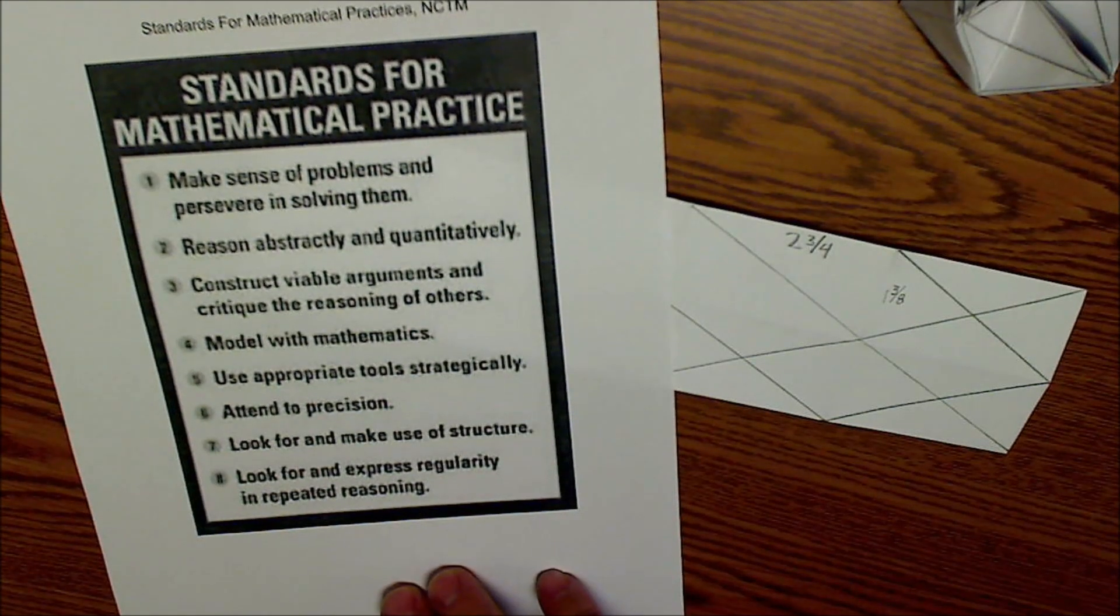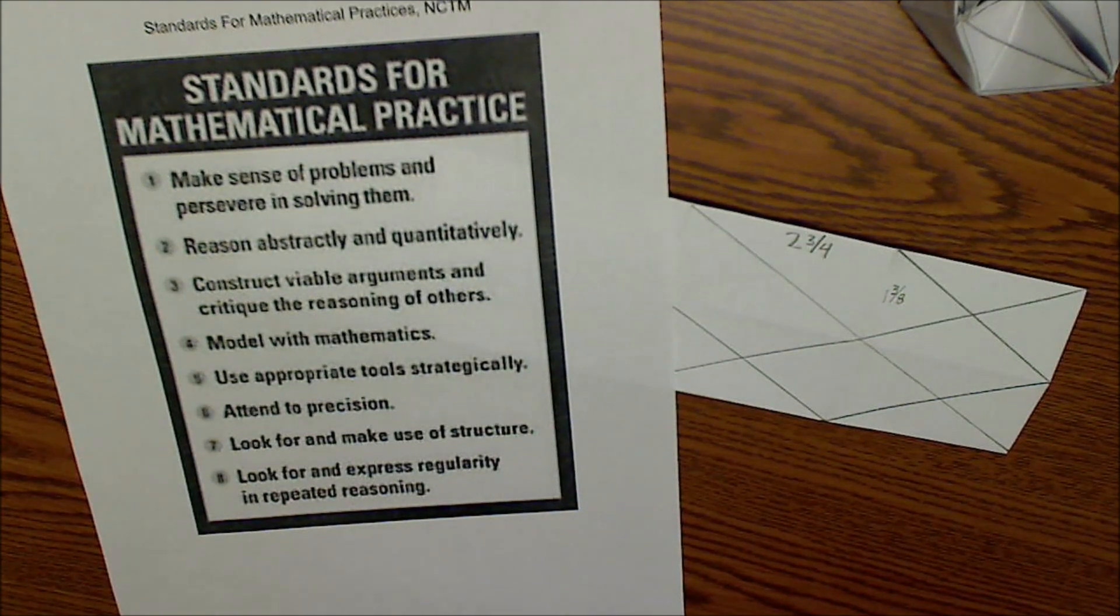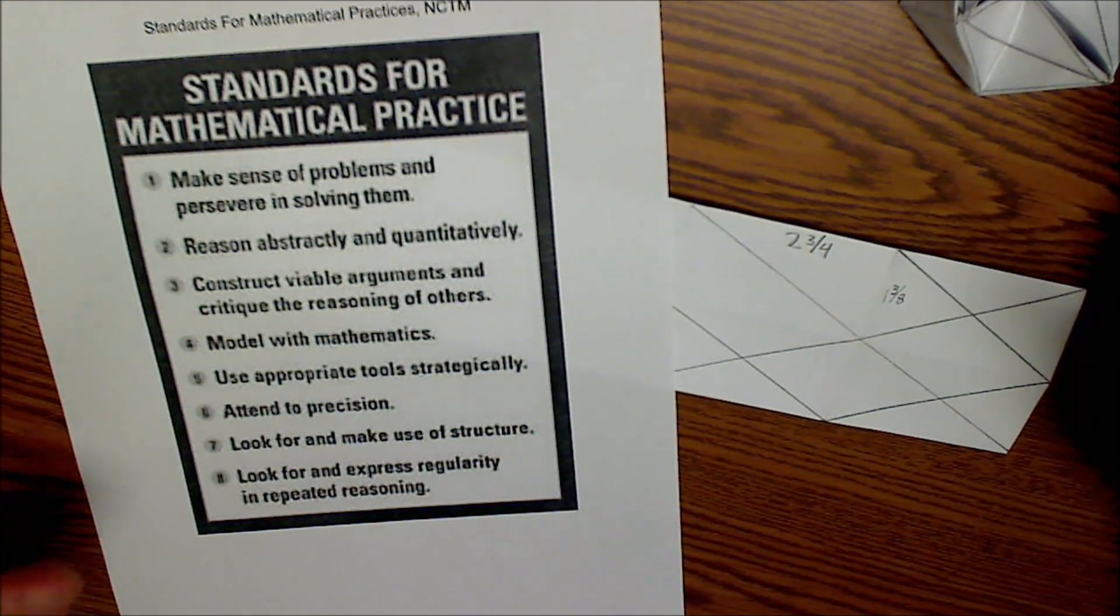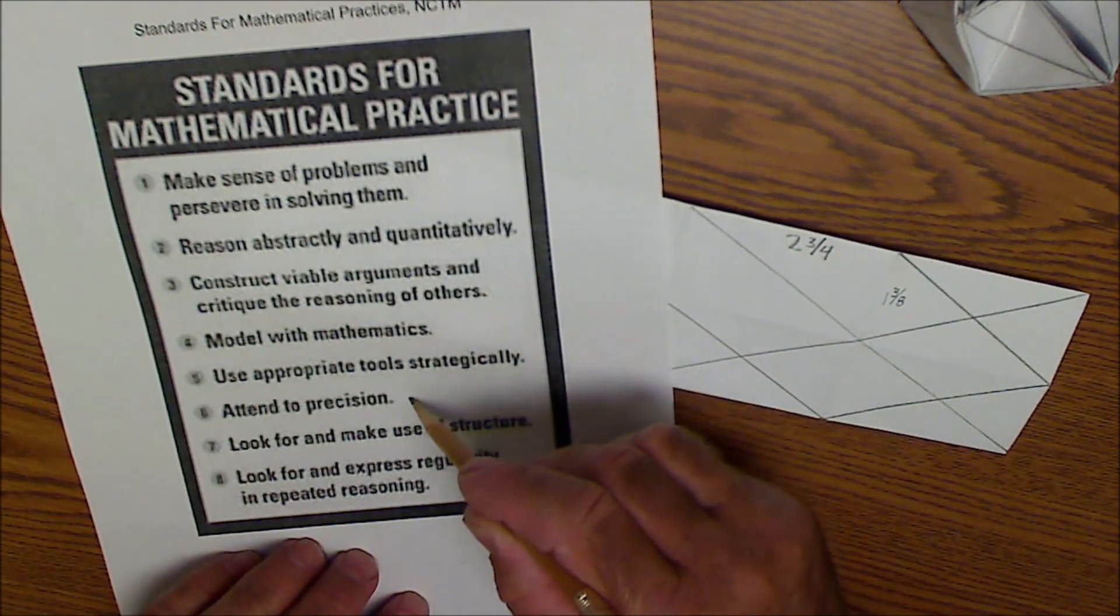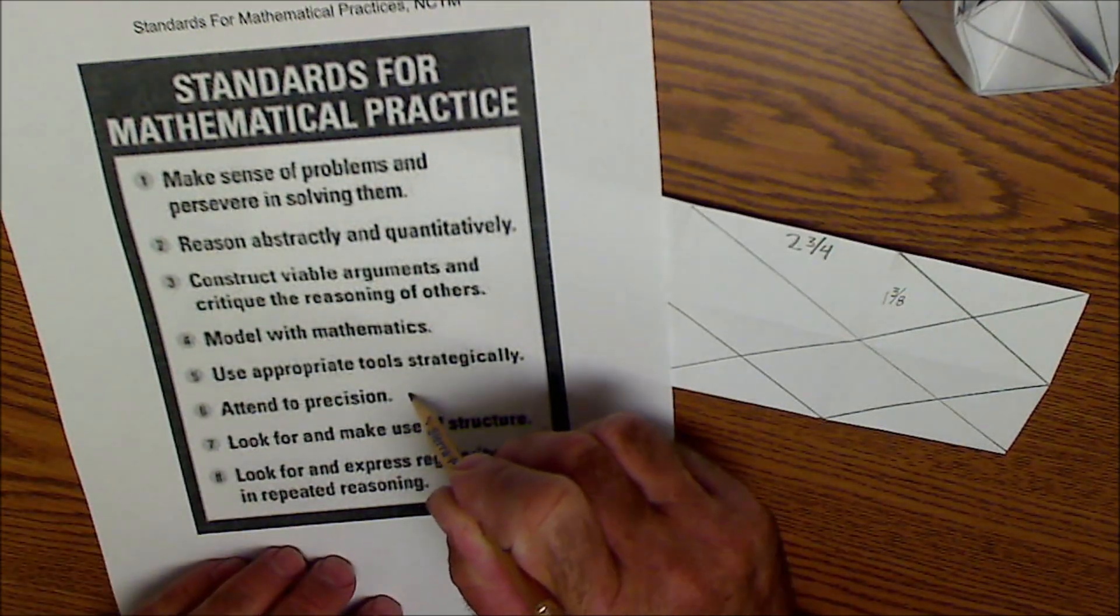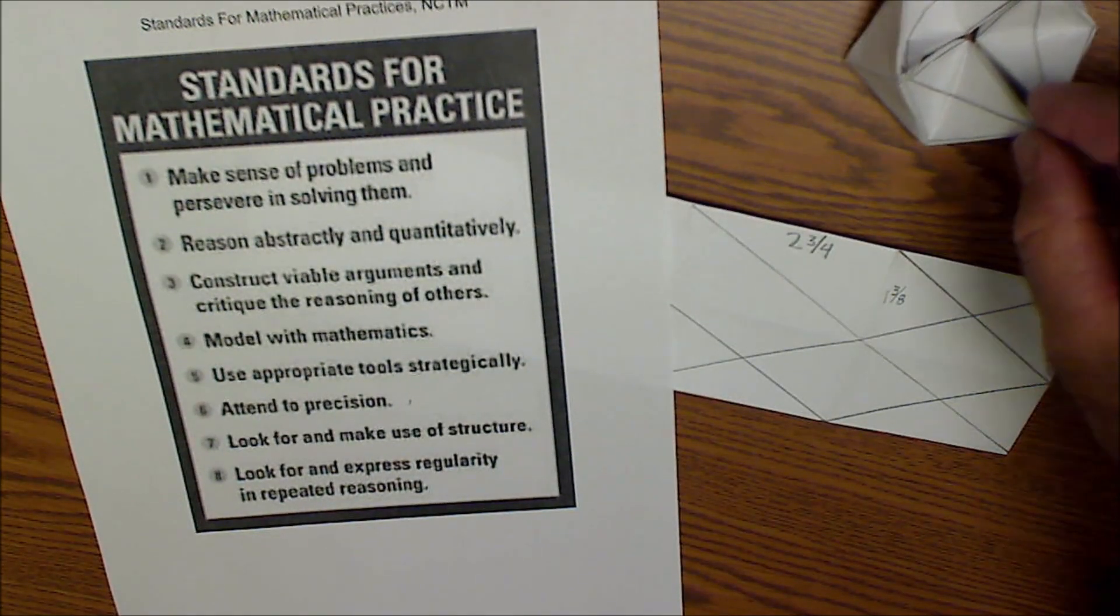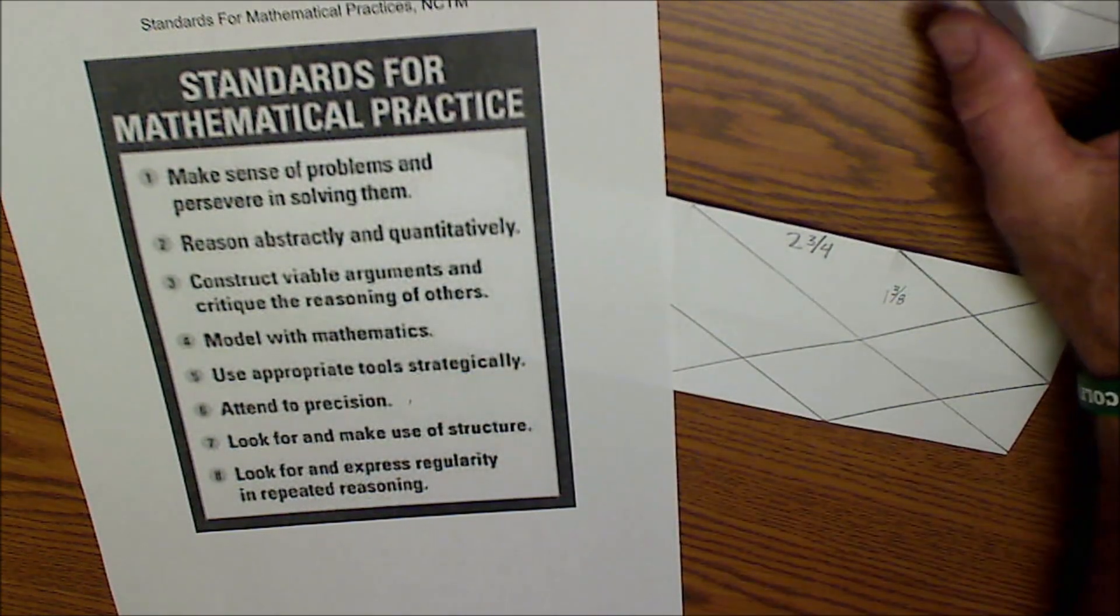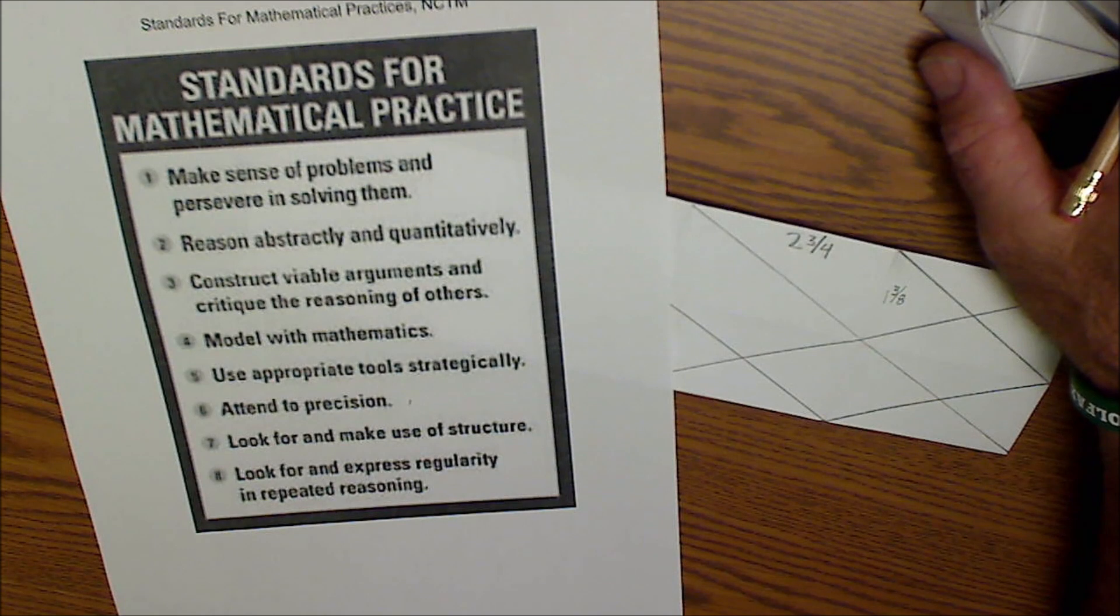Before I do that, I just want to talk about NCTM's standards for mathematical practice. These things are great ideas and they're really a big part of every math classroom, but sometimes I feel like doing projects like this really help highlight these standards for practice. Attending to precision is hard to get kids to do on a test or worksheet, but when they're actually building things, if they don't attend to precision when they're folding this, it all falls apart. Look for and make use of structure, model—I mean you're building a physical model which really kind of highlights it. So I think projects like this really teach the mental habits and practices you need to be good at anything, whether it's math or making stuff.